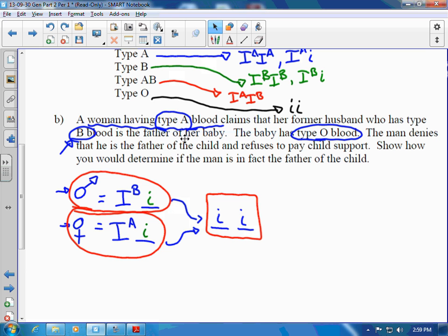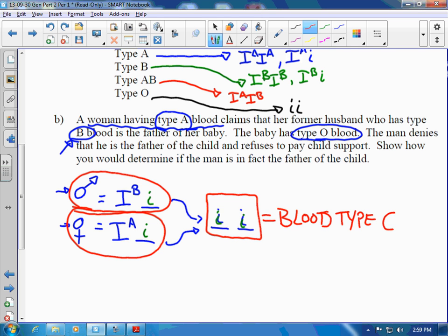So we would see that, in this case, this i and this i would come together to form this baby who has blood type O.